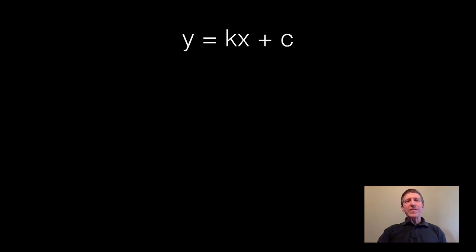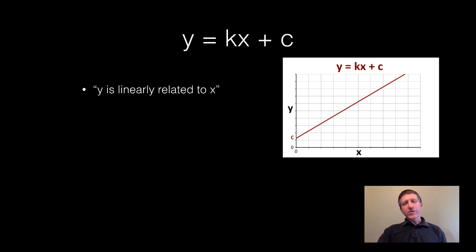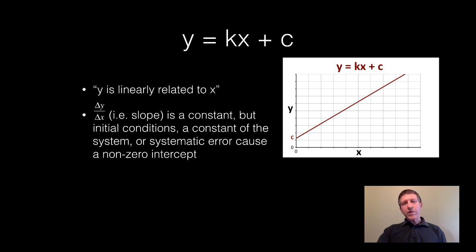Another common relationship is y equals kx plus c, also phrased as y being linearly related to x. And here's a graph of such a relationship. Notice that it is linear. It's a straight line, but it also does not pass through the zero zero or the origin. It's got some non-zero vertical intercept.